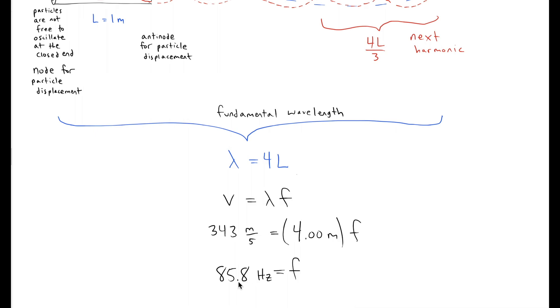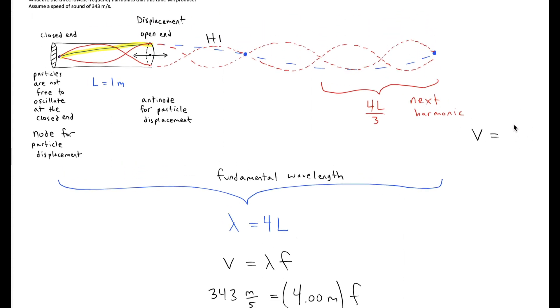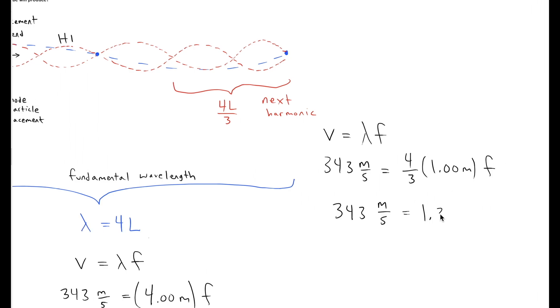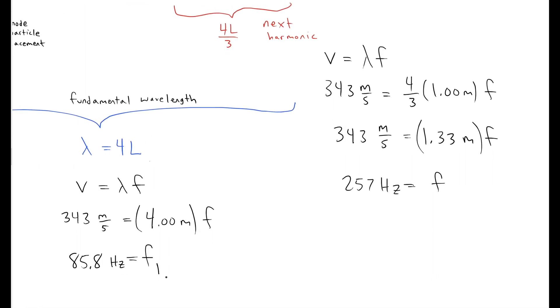It's 85.8 hertz. Now if we use the wave formula on the next harmonic that's possible, use the same speed of sound, but now our wavelength is only going to be 4/3 times L, which is 1.33 meters, I get 257 hertz.